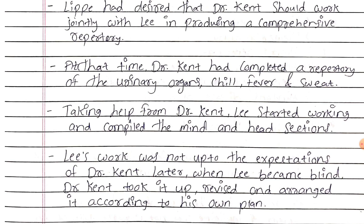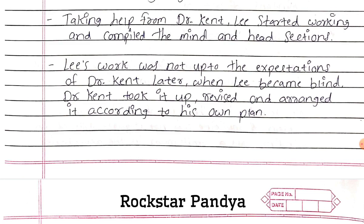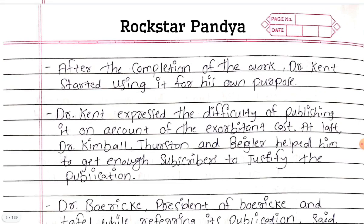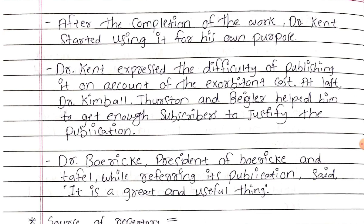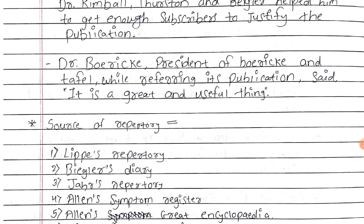At that time Dr. Kent had completed a repertory of the urinary organs, chill, fever, and sweat. Taking help from Dr. Kent, Lee started working and compiled the mind and head sections. Lee's work was not up to the expectations of Dr. Kent. Later when Lee became blind, Dr. Kent took it up, revised and arranged it according to his own plan. After completion of the work, Dr. Kent started using it for his own purpose. Dr. Kent expressed the difficulty of publishing it on account of the exorbitant cost. At last, Dr. Kimball, Thurston, and Bigler helped him to get enough subscribers to justify the publication. Dr. Boric, president of Boric and Tafel, while referring to its publication said, 'It is a great and useful thing.'